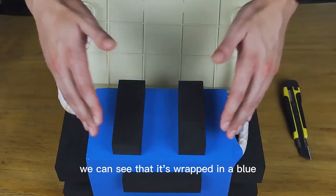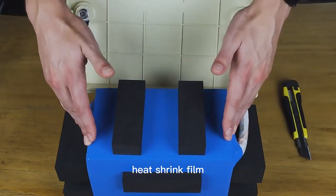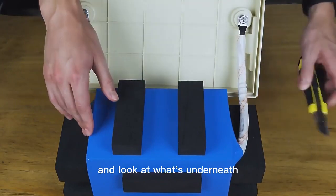We're taking the battery out of its casing. We can see that it's wrapped in a blue heat shrink film. So let's go ahead and tear this off and look at what's underneath.